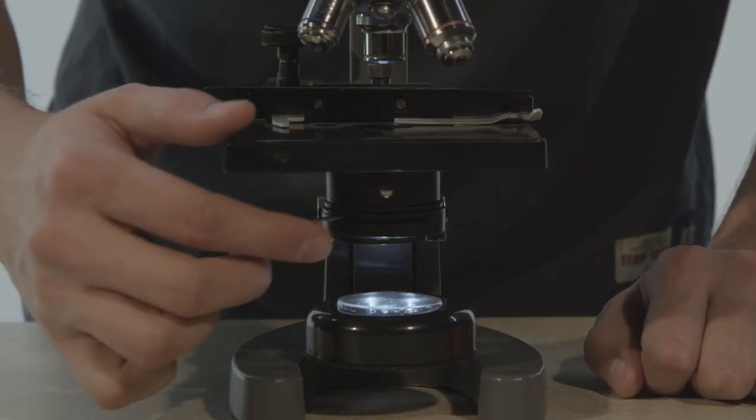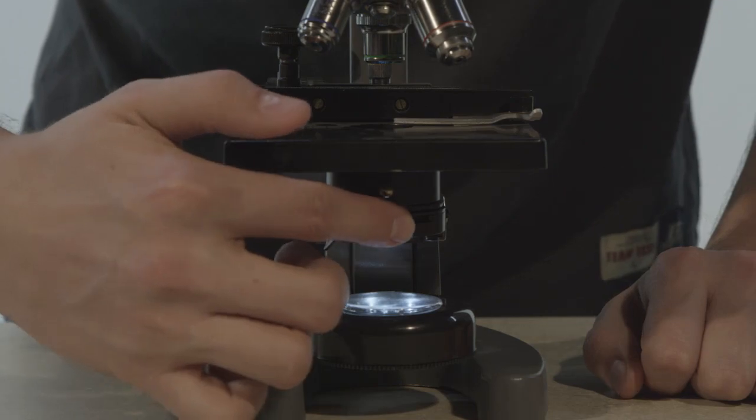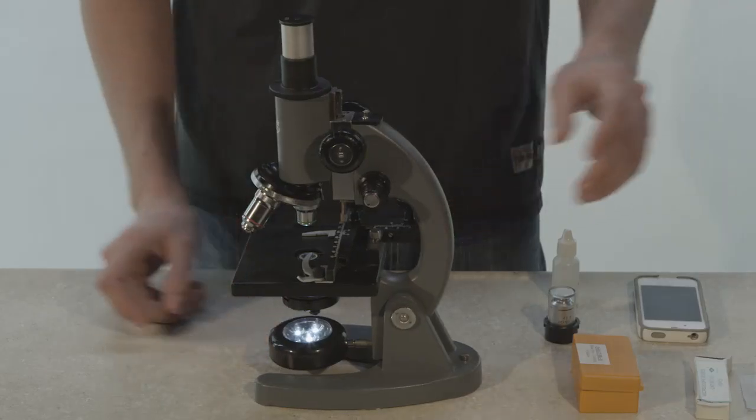You can alter the amount of light that comes up through the slide by adjusting this part of the microscope. This is a side view of the microscope.